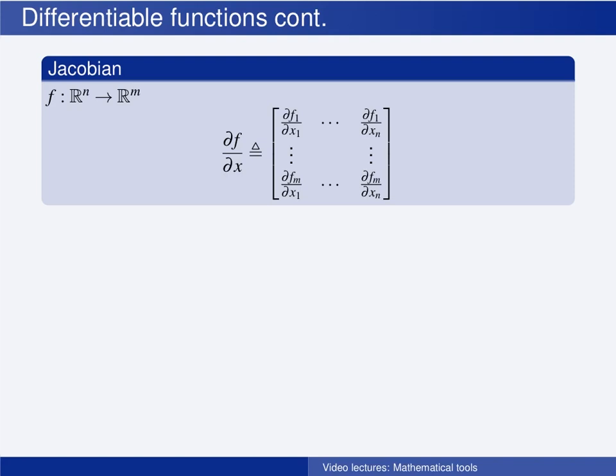The Jacobian is simply found by taking the partial derivative of the first vector element f1, first with respect to x1, then with respect to x2, x3, and so on up to xn. This gives the first row of the Jacobian.